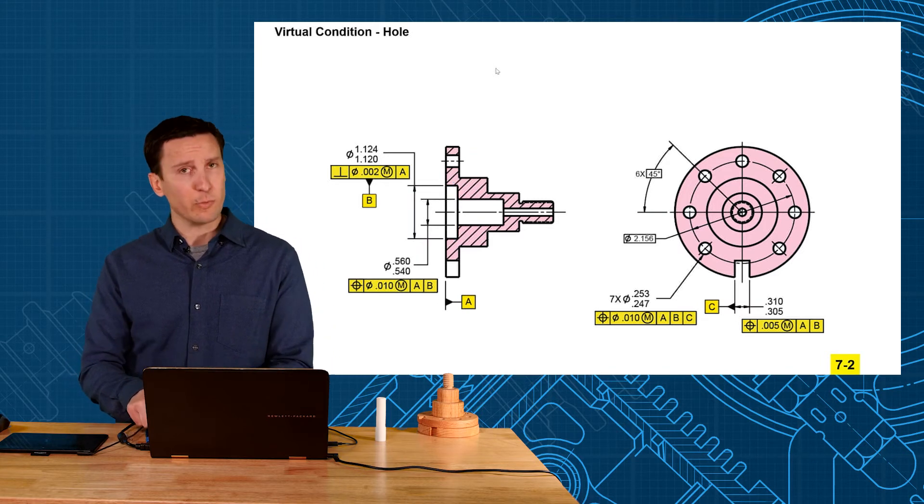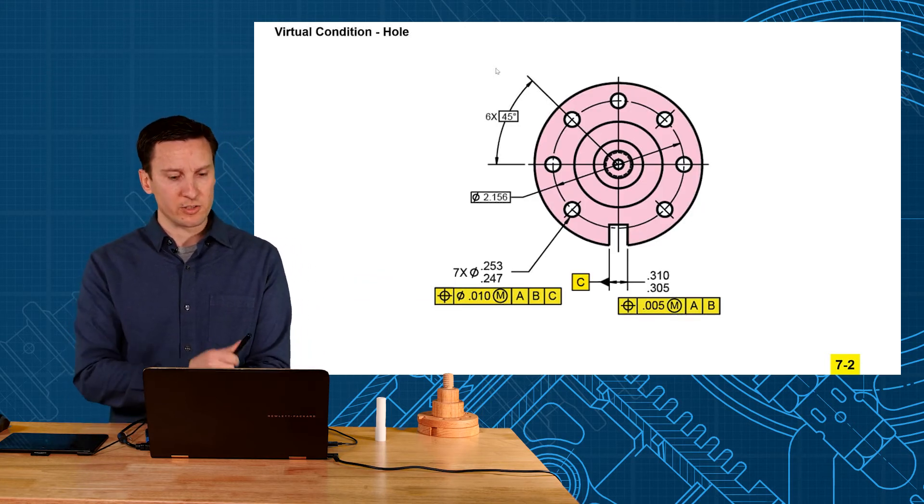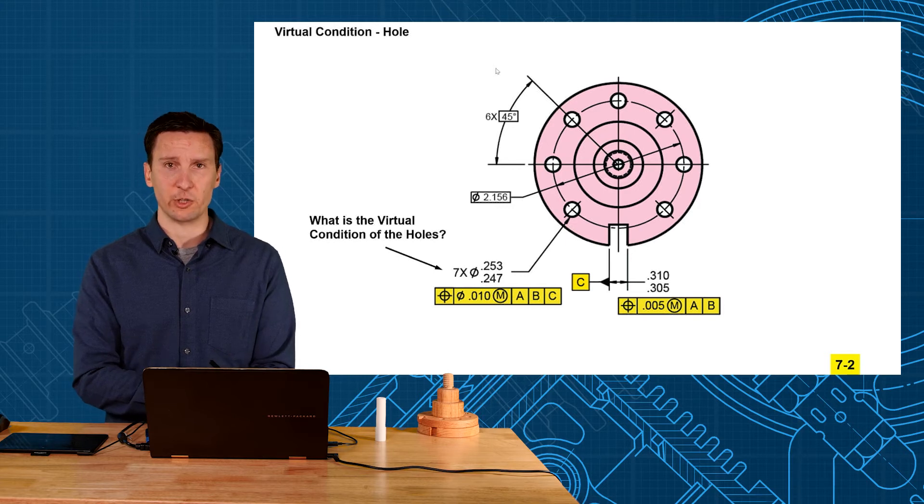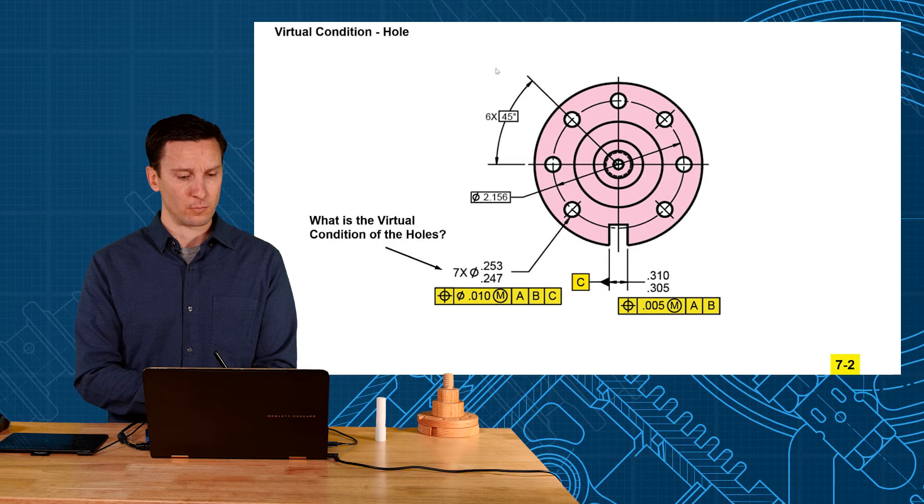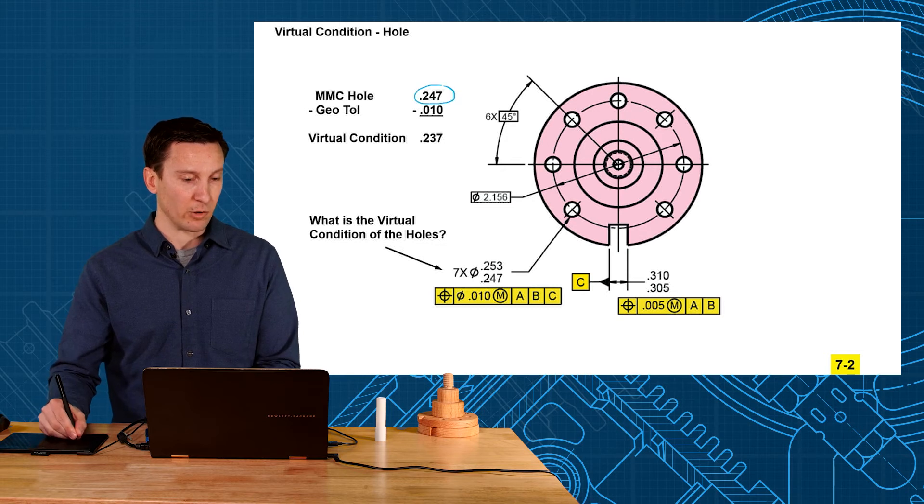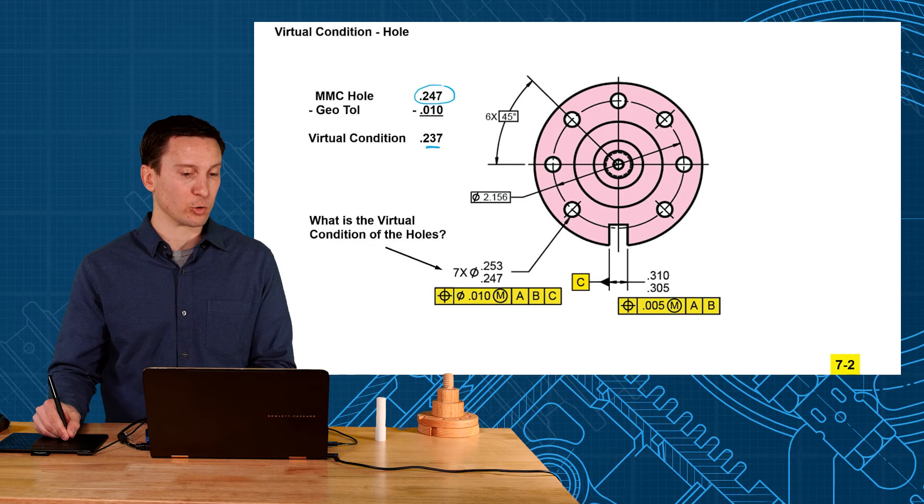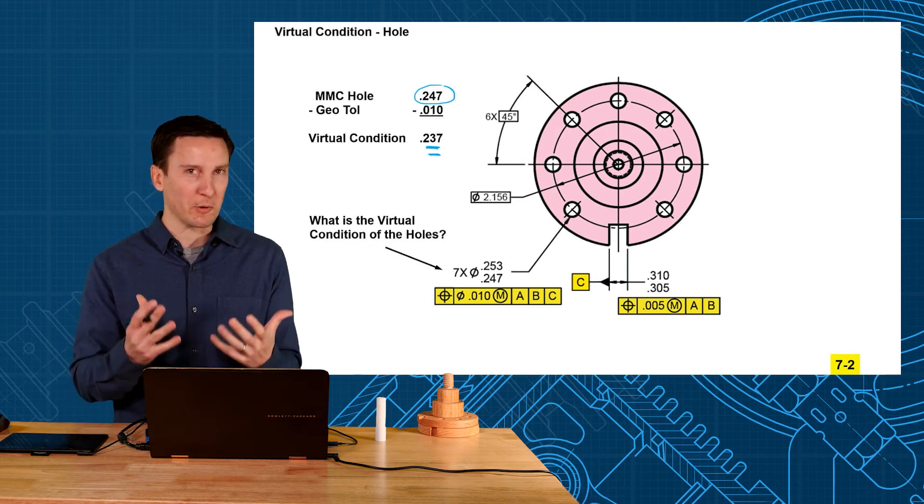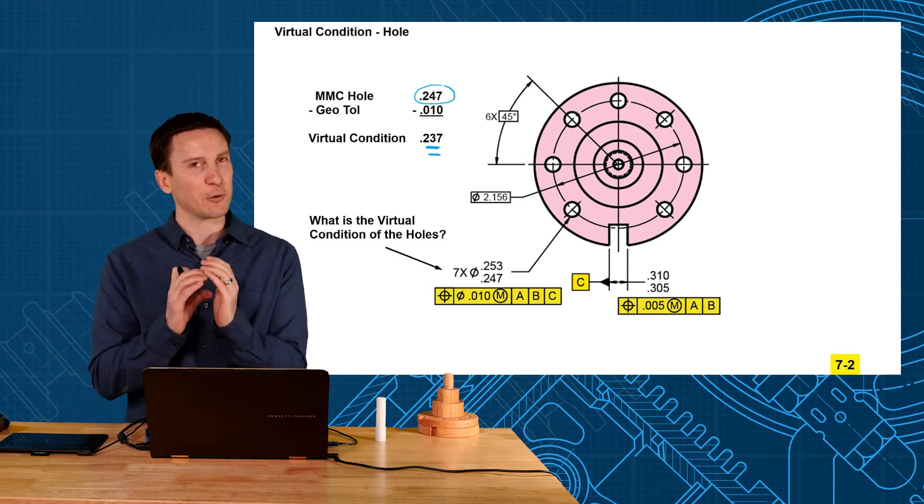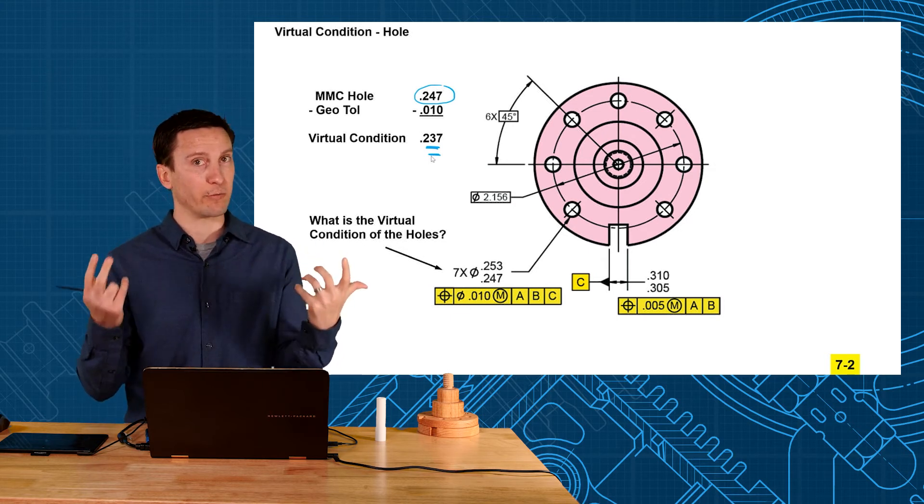Now I'd like to zoom in on that right view there so we can see that a little better. And you've seen me do one now so let's see if you could do it. What would be the virtual condition of those holes? You should have said 237. Because what we do is we take our smallest hole which is 247. That's our MMC. Subtract out our geometric tolerance and that gives us our virtual condition 237. Now remember the hole cannot get that small. Smallest hole you can ever make is 247 but it moves in these different locations. That's what appears to look like virtually.